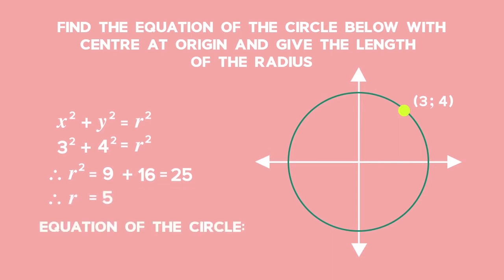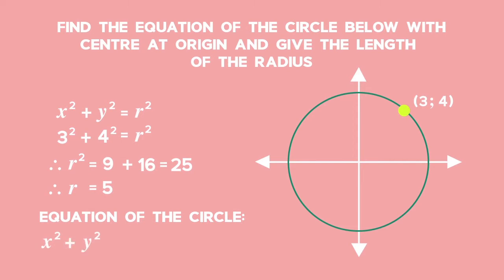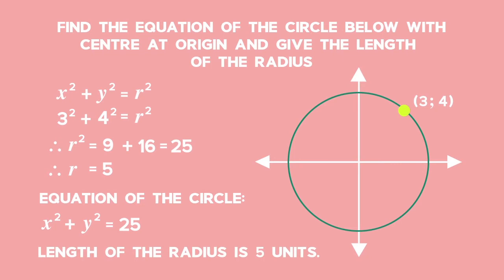The equation of a circle is x squared plus y squared equals 25 and the length of the radius is 5 units.